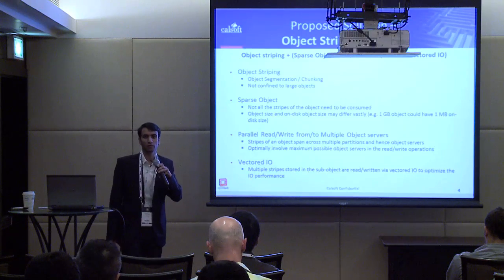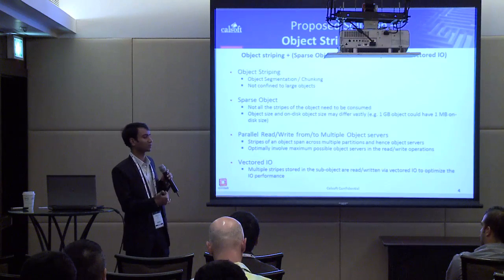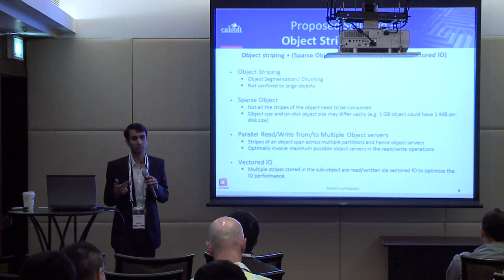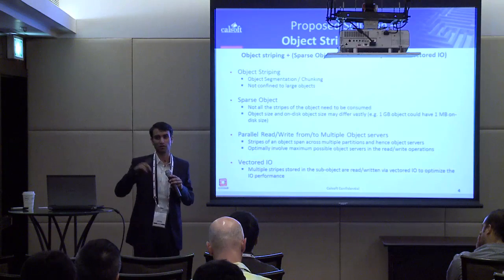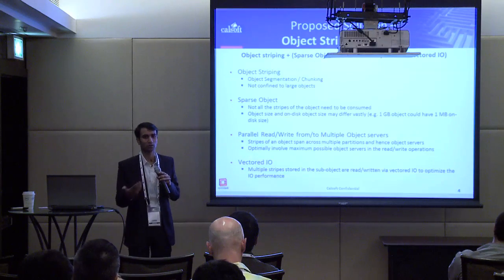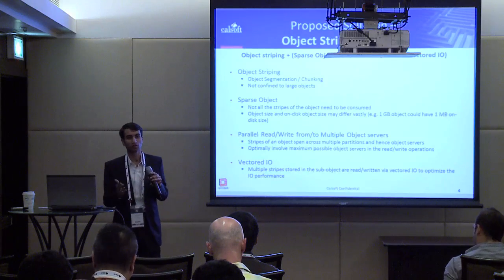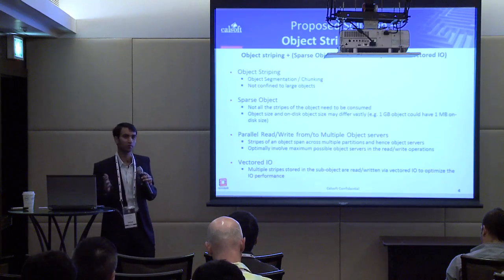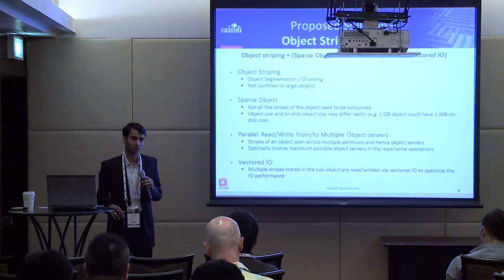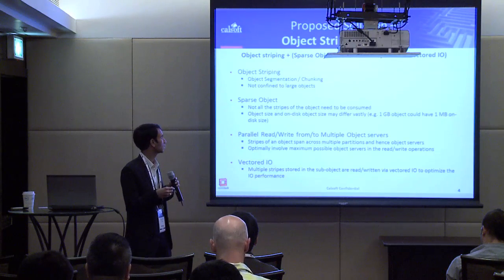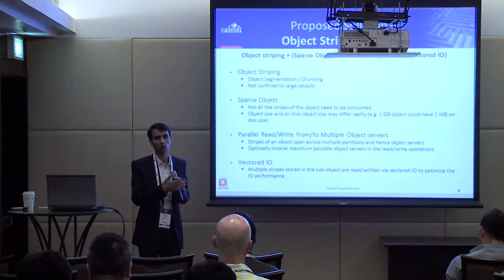On erasure coding: we certainly haven't thought of it in this process initially, but when we went into details we realized erasure coding can certainly be added. However, that would address a larger-scale problem — removing multi-copy mirroring and replication entirely. That is not exactly what we are trying to solve here. Here, we are trying to solve a better way of segmentation, better handling of objects, and based on that, what can be achieved.